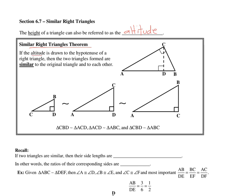If the altitude is drawn to the hypotenuse of a right triangle — here we have this right triangle, and we're drawing a line to the hypotenuse — then two triangles are formed, and they're similar to each other and the original triangle.